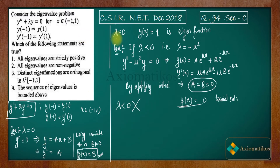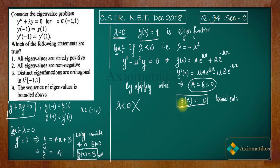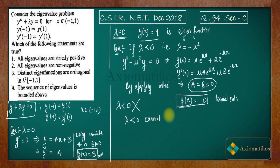To summarize: in the λ = 0 case we got a non-trivial eigenfunction, so λ = 0 is a valid eigenvalue. But in the λ < 0 case, we only get a trivial (zero) eigenfunction, which is not a valid eigenfunction. Hence λ < 0 cannot be an eigenvalue.